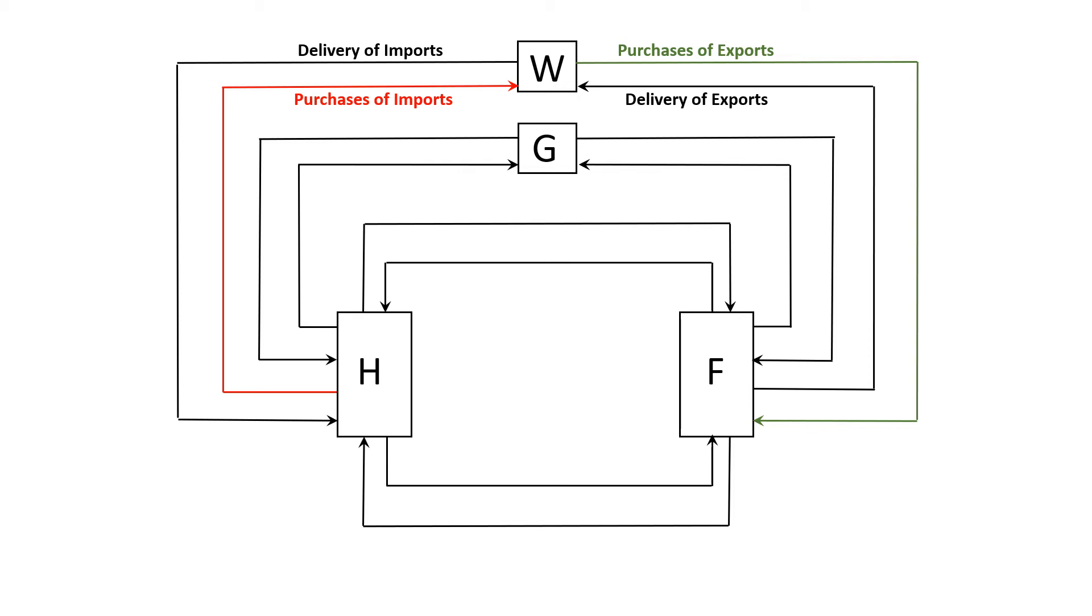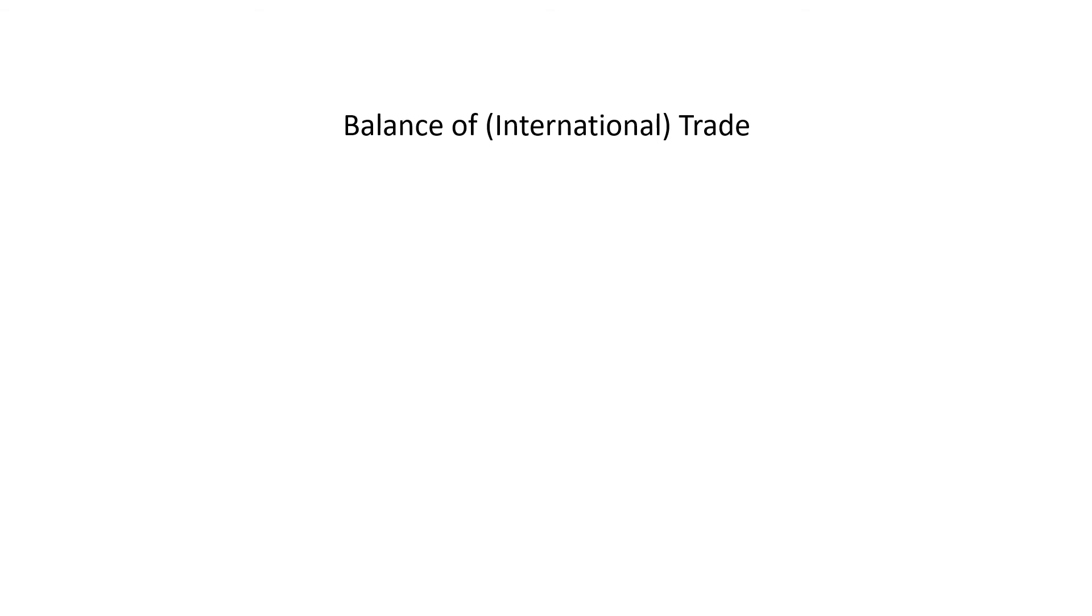The relationship between purchases of imports and purchases of exports is known as the U.S. balance of international trade, or usually just referred to as the balance of trade. The word international is implicit. A balance of trade surplus would mean that the purchases of exports exceed the purchases of imports. In other words, more spending is flowing into the American economy than flowing out to other countries. Because there is a net injection of spending into the economy, the economy will speed up, ceteris paribus.